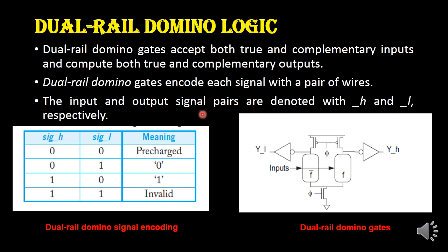The input and output signal pairs are denoted by H and L respectively. If signal H and signal L are both equal to 0, that means it is in the pre-charge state. If signal H is 0 and signal L is 1, then the output will be equal to 0. If signal H is equal to 1 (asserted), then the output will be equal to 1. If both signals are asserted — both equal to 1 — then it will be an invalid output.